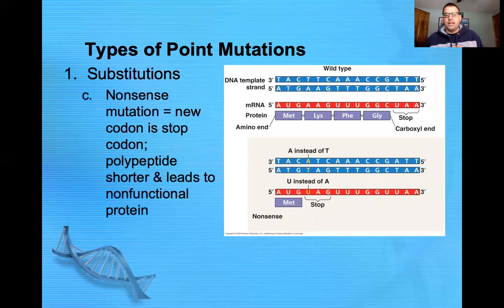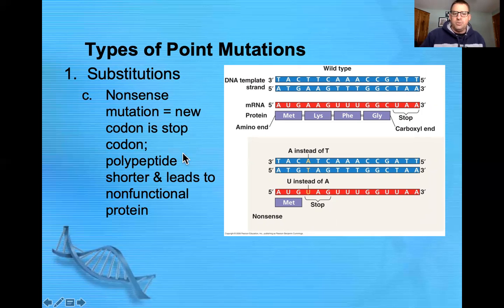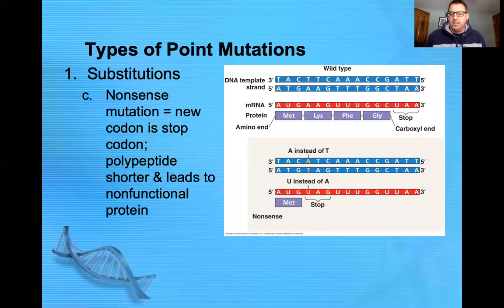We can also end up with what's referred to as a nonsense mutation. In the wild type, we have a T in the template strand that is replaced with an A, leading to a codon of UAG — a stop codon — appearing way too early. As a result, the polypeptide that's made is much shorter and nonfunctional. This is a very drastic type of mutation because our protein has been truncated or shortened.